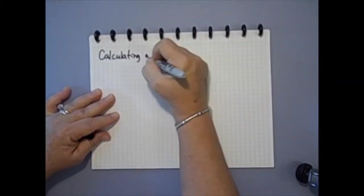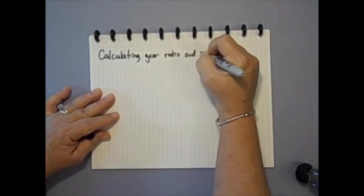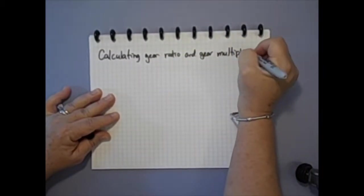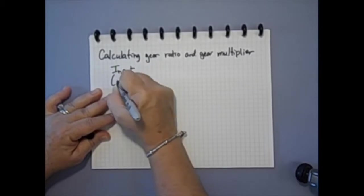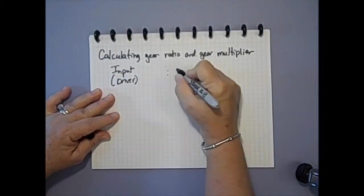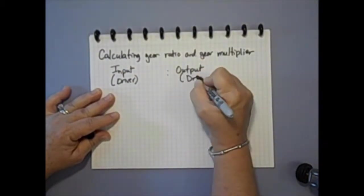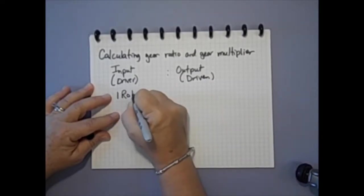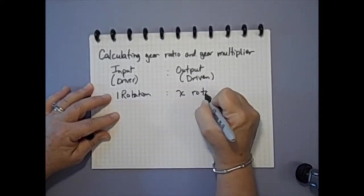In this example, the gear pairing of 40 to 20 produces a gear ratio of 1 to 2. When the input gear rotates one time, the output gear rotates two times. Use the output, or X, as a distance multiplier in order to predict the distance the mousetrap car will travel.